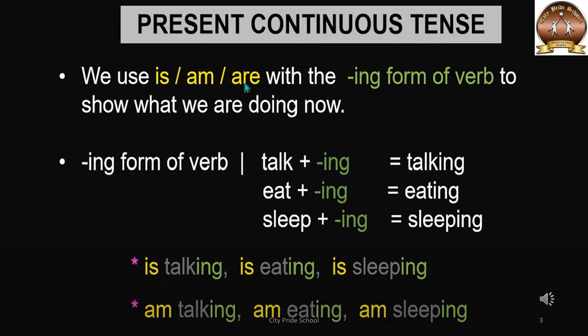The ing form of the verb means the main verb plus ing. For example, talk plus ing becomes talking, eat plus ing becomes eating, and sleep plus ing becomes sleeping. These are the ing form verbs. To use this in a present continuous tense, we use helping verbs before the ing form verb. For example: is talking, is eating, is sleeping; or am talking, am eating, am sleeping; or are talking, are eating, are sleeping. So we are using the helping verb with the main verb in ing form.